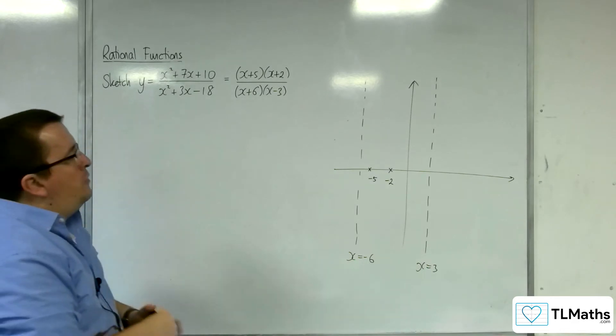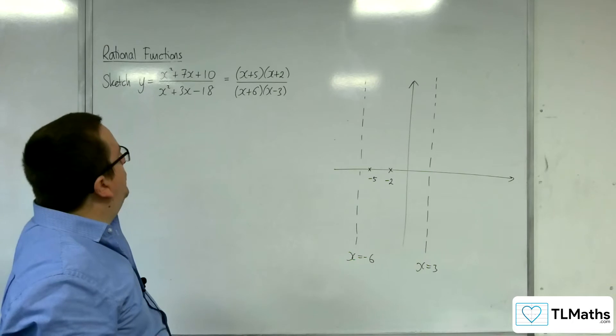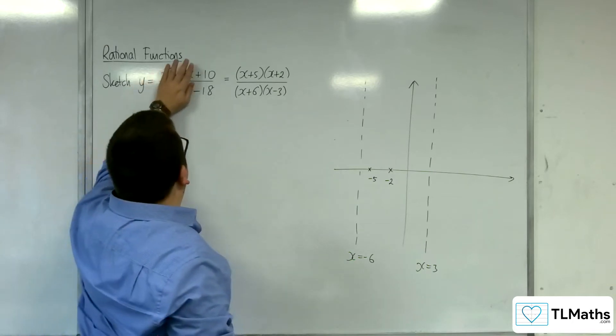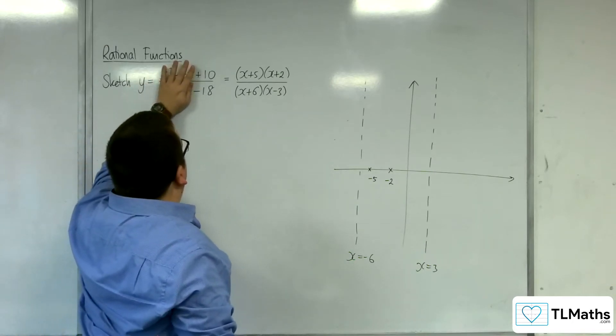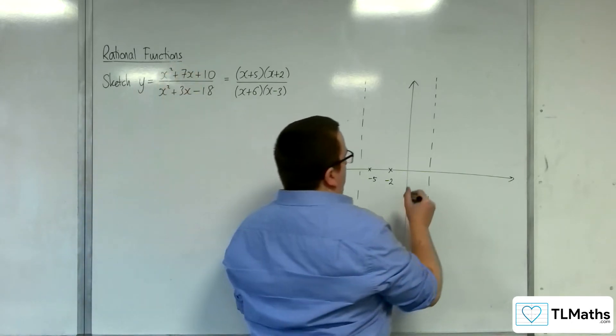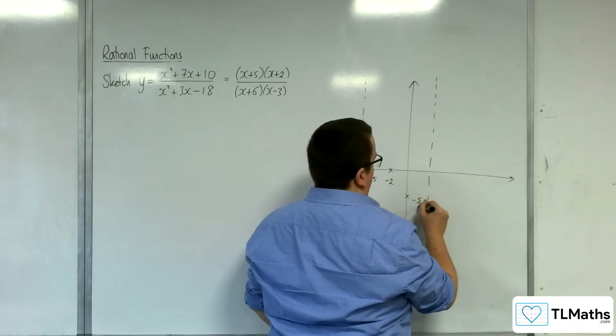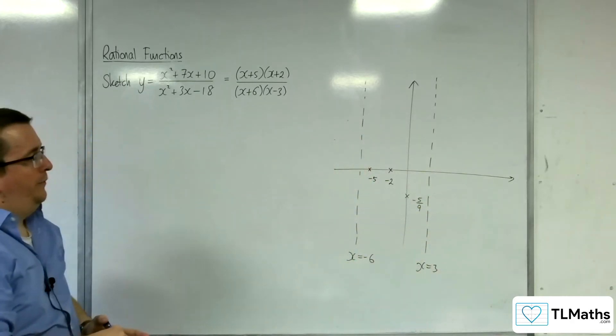Now, how about where it crosses the y-axis? So where is it crossing the y-axis? That's when x is 0. So that would be 10 over minus 18, which is minus 5 ninths. So somewhere here. So minus 5 ninths.